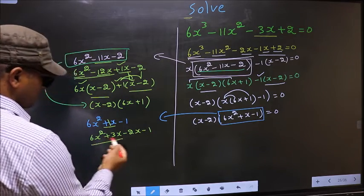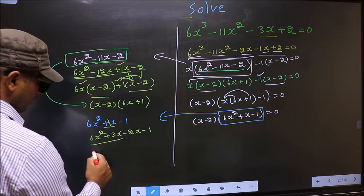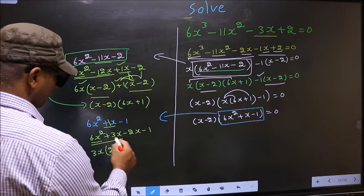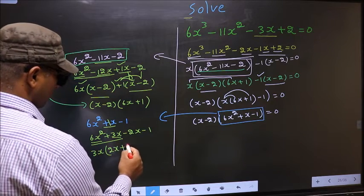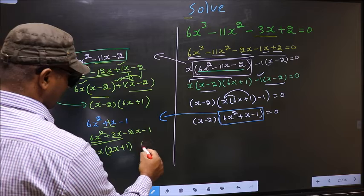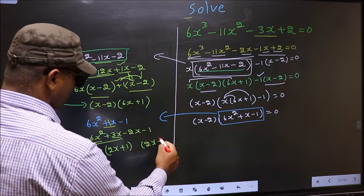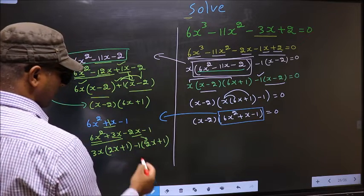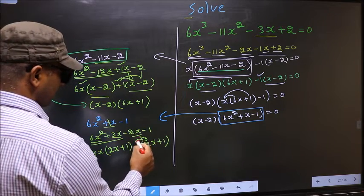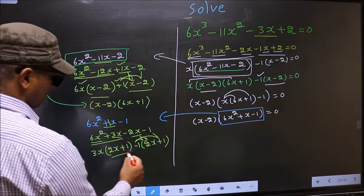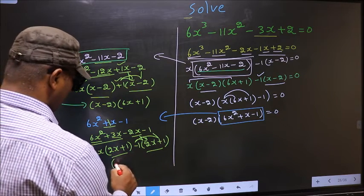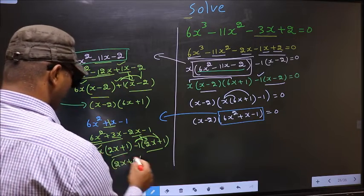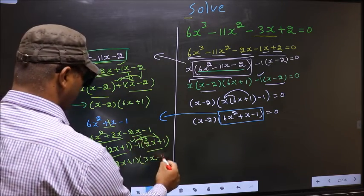Now from these first 2 terms, what can be taken out common is 3x. So here you get 2x plus 1. From the next 2 terms, 2x goes inside so outside you get minus 1. Even if you multiply and check, you still get the same thing. Now you take out 2x plus 1 as common, so here you have 3x and here minus 1.